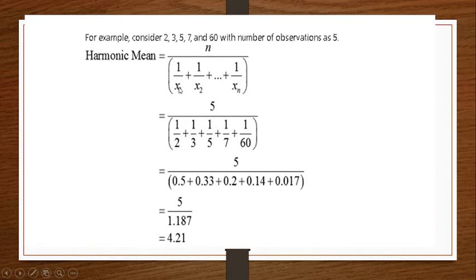divided by 1 by x1. What is first number? It is 2. So 1 by 2 plus 1 by x2, 1 by 3. This, then plus 1 by 5 plus 1 by 7 plus 1 by 60. You need to write it here.